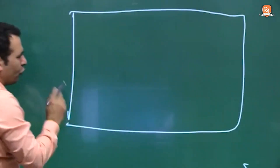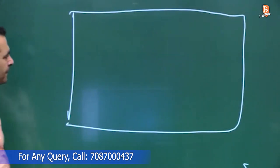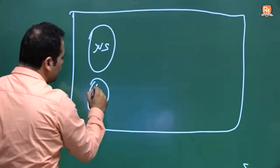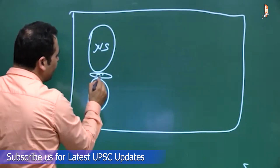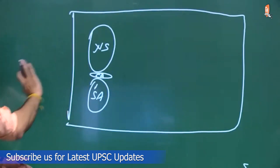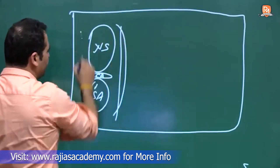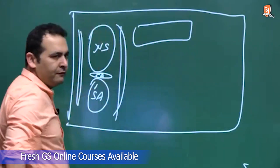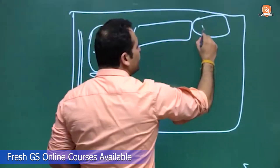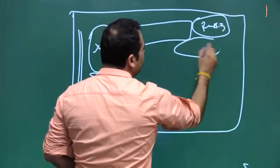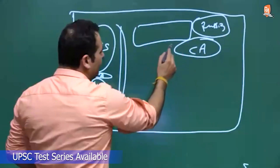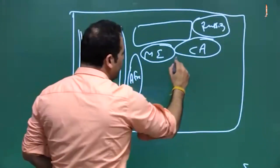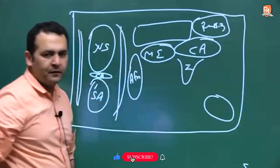Looking at a world map: here is North America, South America, Central America. Across the ocean is Europe, with Russia to its east, Central Asia, the Middle East, Africa, India, and Australia.